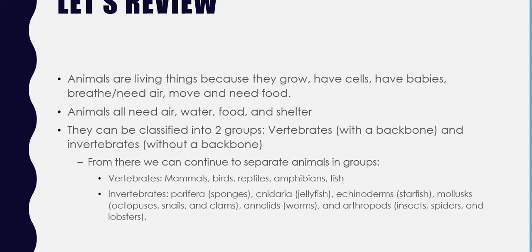As we talked about last week, they can be separated into different groups. The vertebrate group has mammals, birds, reptiles, amphibians, and fish — so it is separated into five groups. And invertebrates includes porifera, cnidaria, echinoderms, mollusks, annelids, and arthropods, which is six groups.